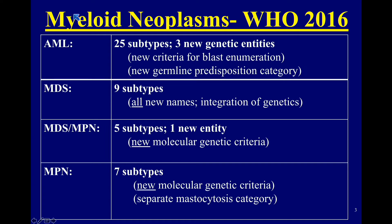When you think about it, doing the math, you have a very big number in AML — 25 at a minimum — and then therapy-related and germline on top of that. Myelodysplasia: nine types. MDS-MPN, the myelodysplastic myeloproliferative: five types. Myeloproliferative: seven types. So that all adds up to more than 50. If you took every case that came in and said 'I have over 50 possible spots this case could go,' it will drive you absolutely nuts.